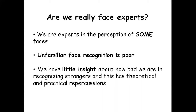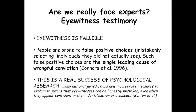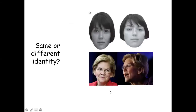This has theoretical and practical repercussions. The theoretical repercussion is that we have used faces of strangers for a long time to describe the neural system for face perception. The practical repercussions are related to eyewitness testimony. Since people are prone to false positive choices, data show that such false positive choices are the single leading cause of wrongful conviction. The question here is: why are we so good with familiar face recognition?